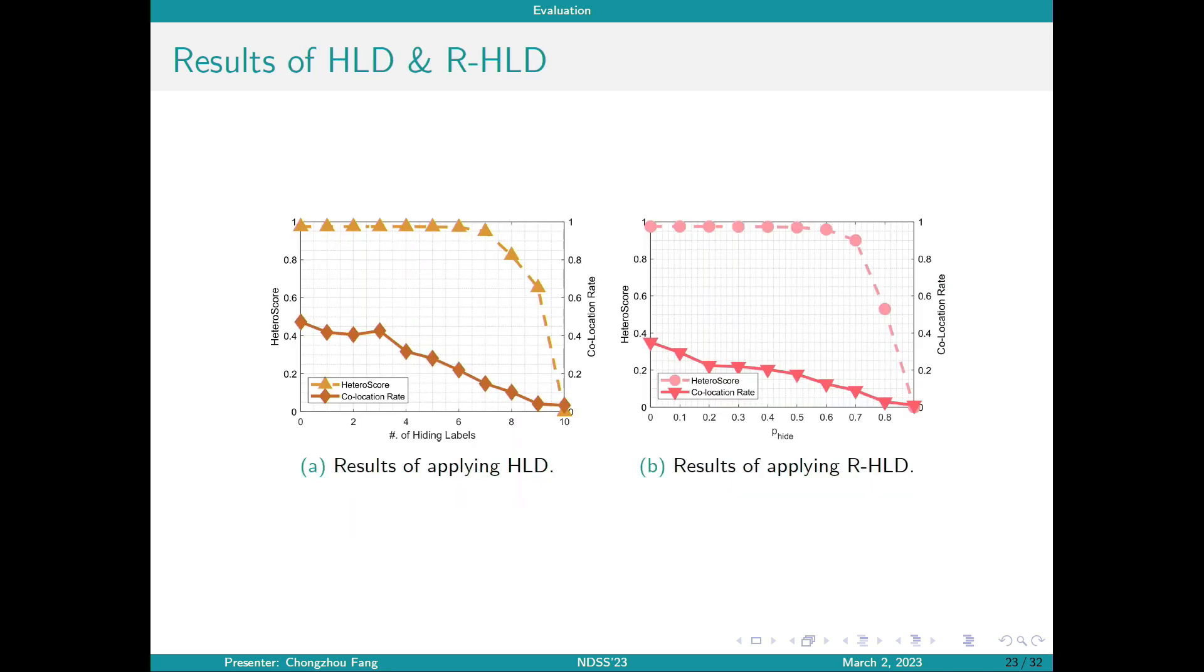We also apply hiding-level defense and randomly hiding-level defense on the physical cluster and deploy collocation attacks to see the change of success rates of attackers. It can be seen that both our proposed techniques can effectively reduce heteroscore as well as the collocation rate an attacker is able to achieve. The more our defense disturbs the scheduling process, the lower it is the success rate of attackers. But this comes with some cost in performance, and we will further perform related analysis in our case study.